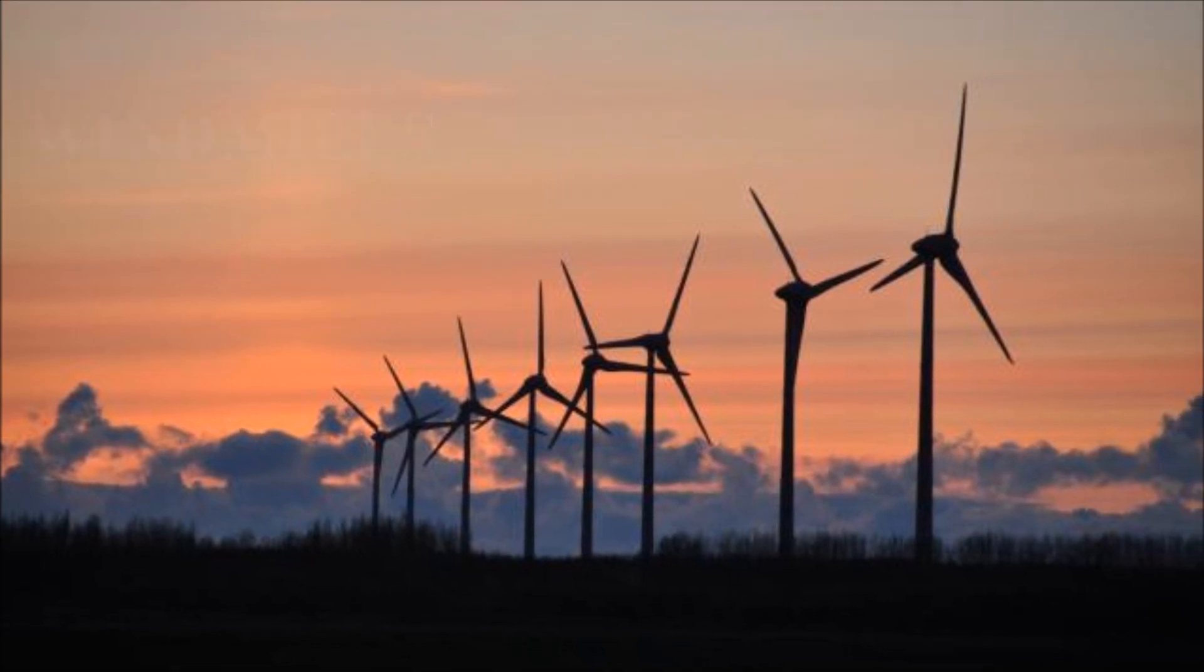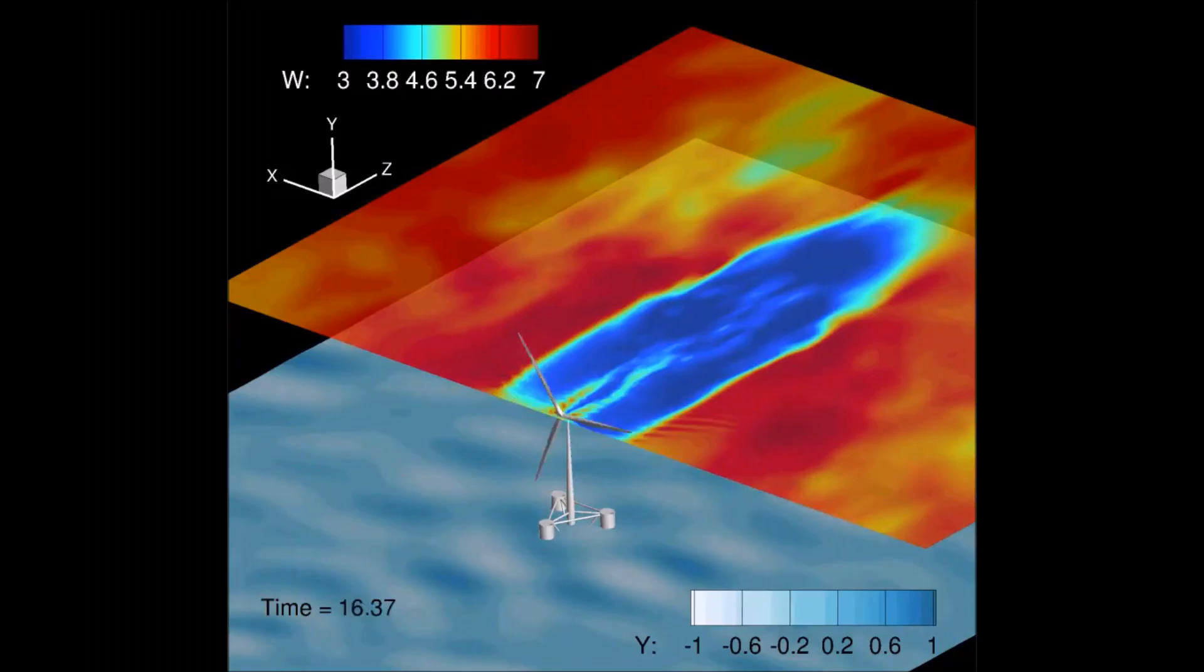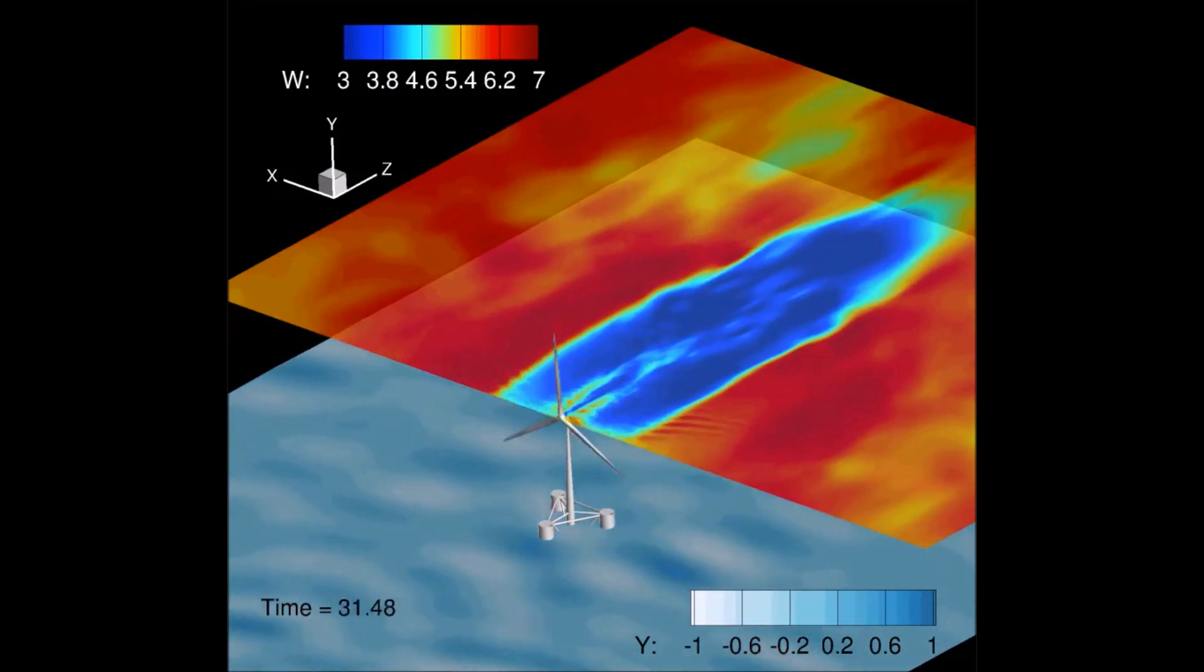A windmill is a machine that converts the energy of the wind into rotational energy by means of vanes called sails or plates. A wind turbine operates on a simple principle.